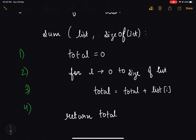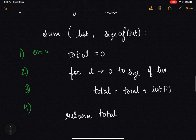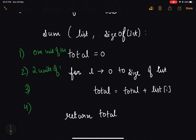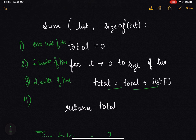Let's calculate the running time for each instruction. Instruction one has only one assignment statement, so it takes one unit of time. Instruction two iterates over the list, requiring one comparison and one increment operation — two units of time. Instruction three has one arithmetic and one assignment statement — also two units of time. Instruction four is just a return statement — one unit of time.